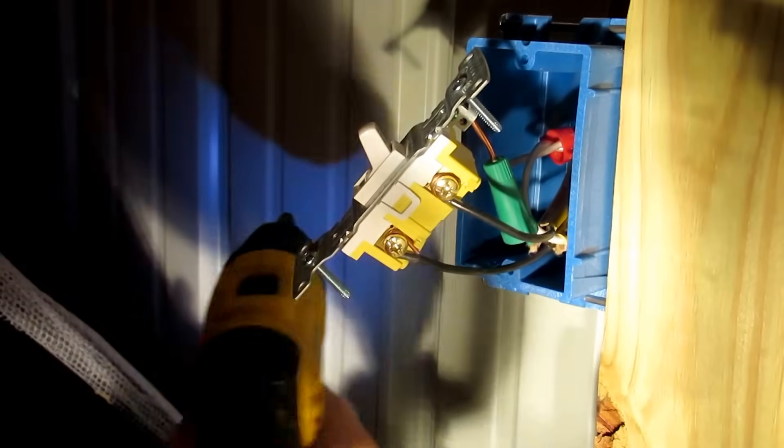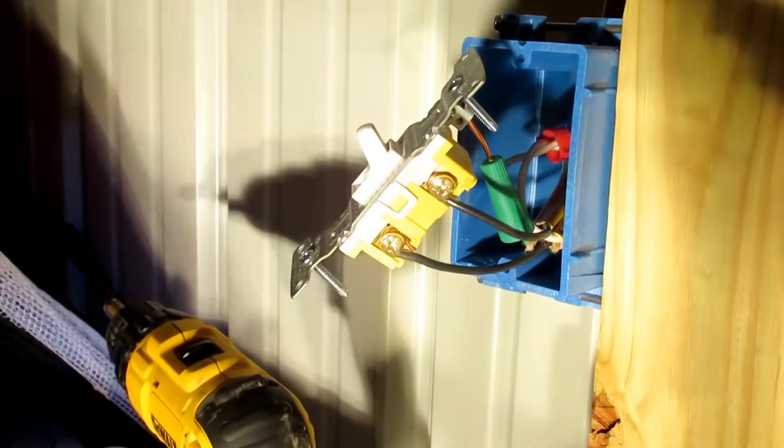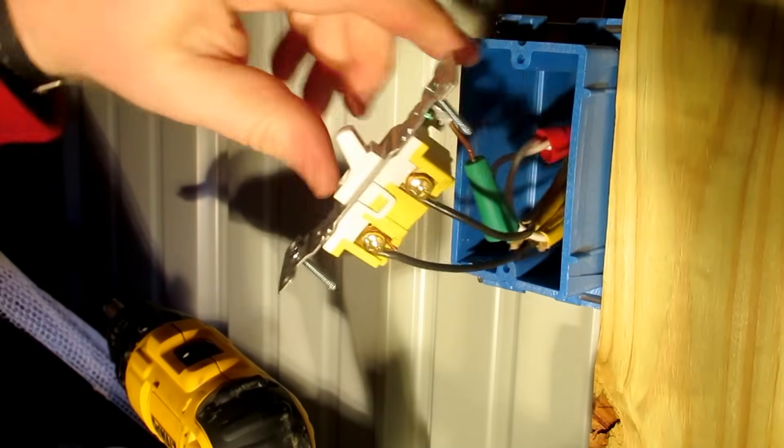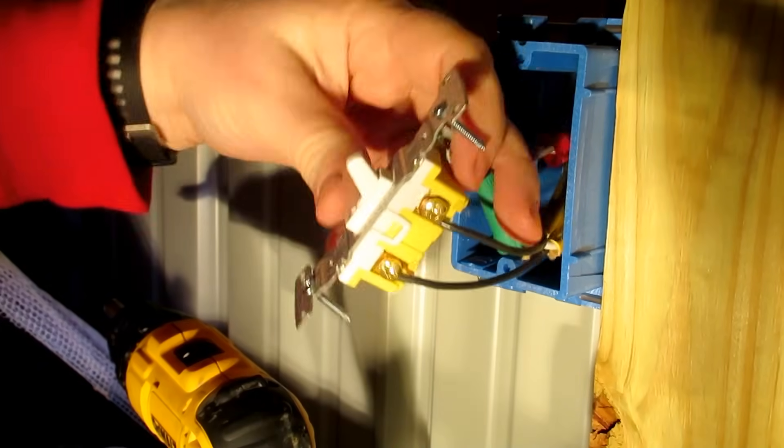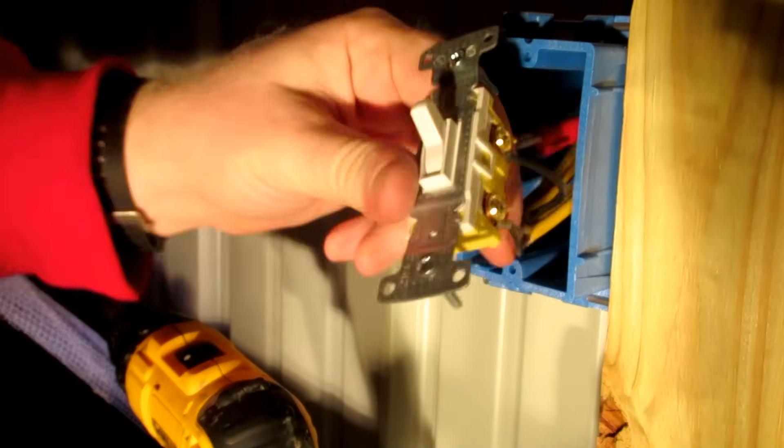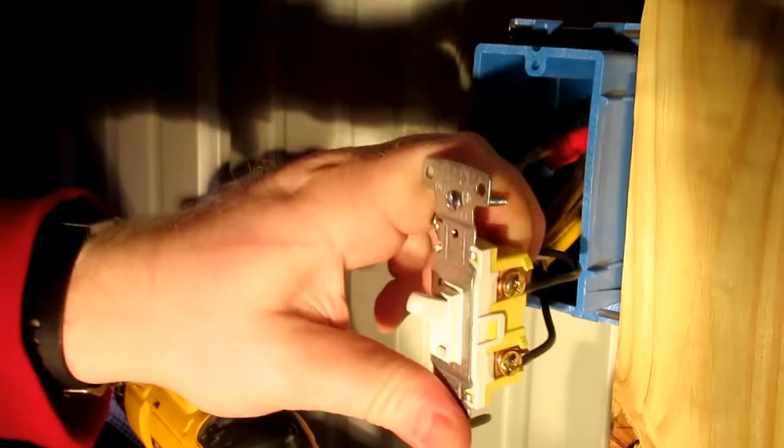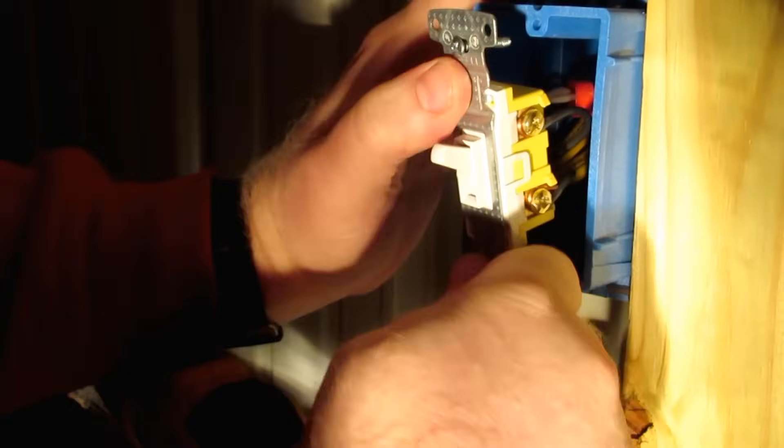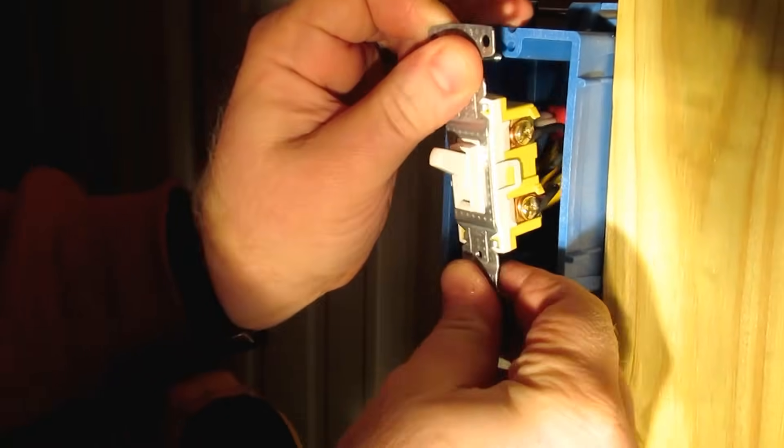What you want to make sure that you do not do is let that bare ground come around and touch any of these connections. When you power your circuit up, it will trip that breaker, you hope, rather quickly. So what I'm going to do now is just work this back into the box. Just slowly folding the wires there. You don't want to get too aggressive with it, but just fold the wires up slightly.